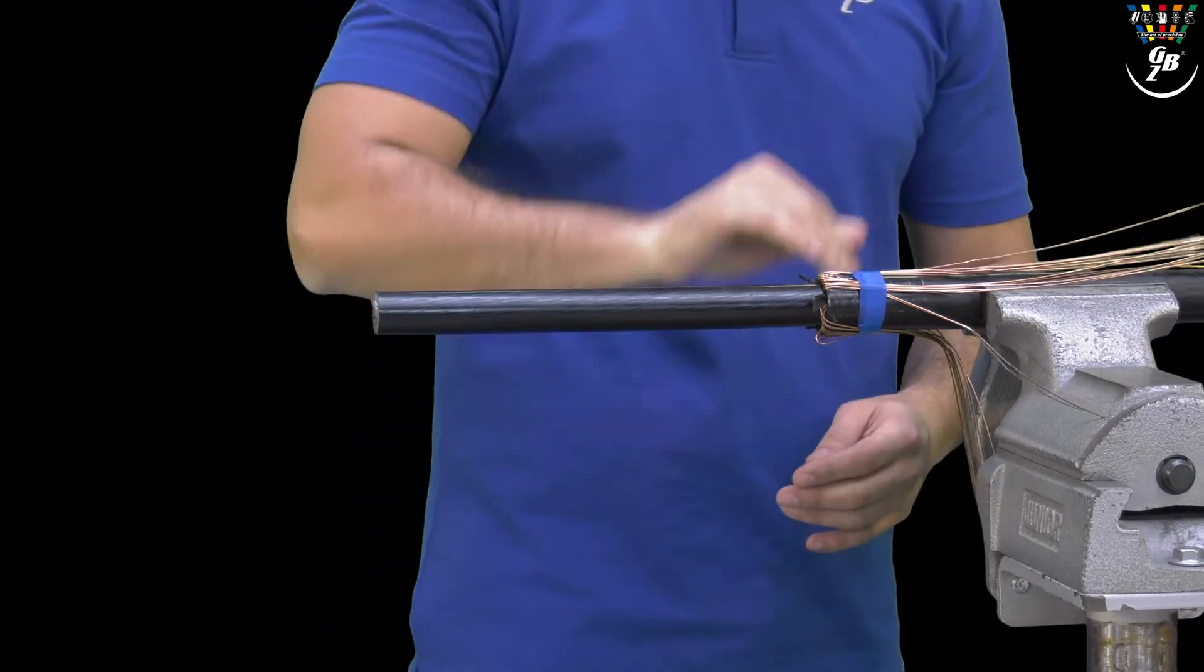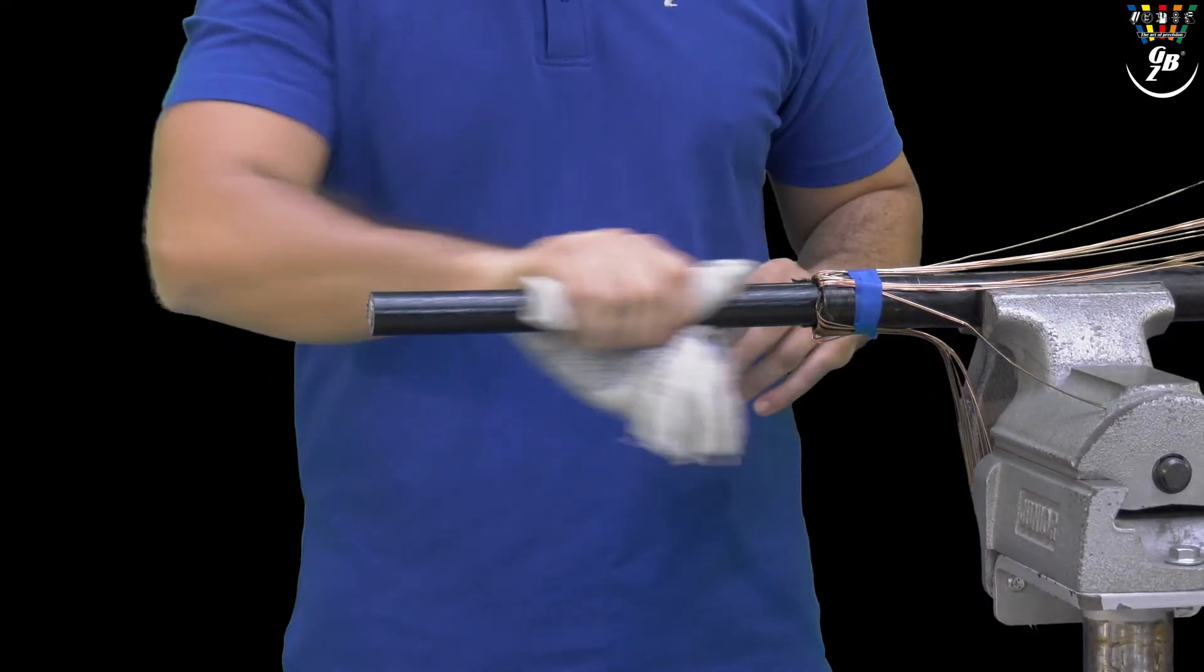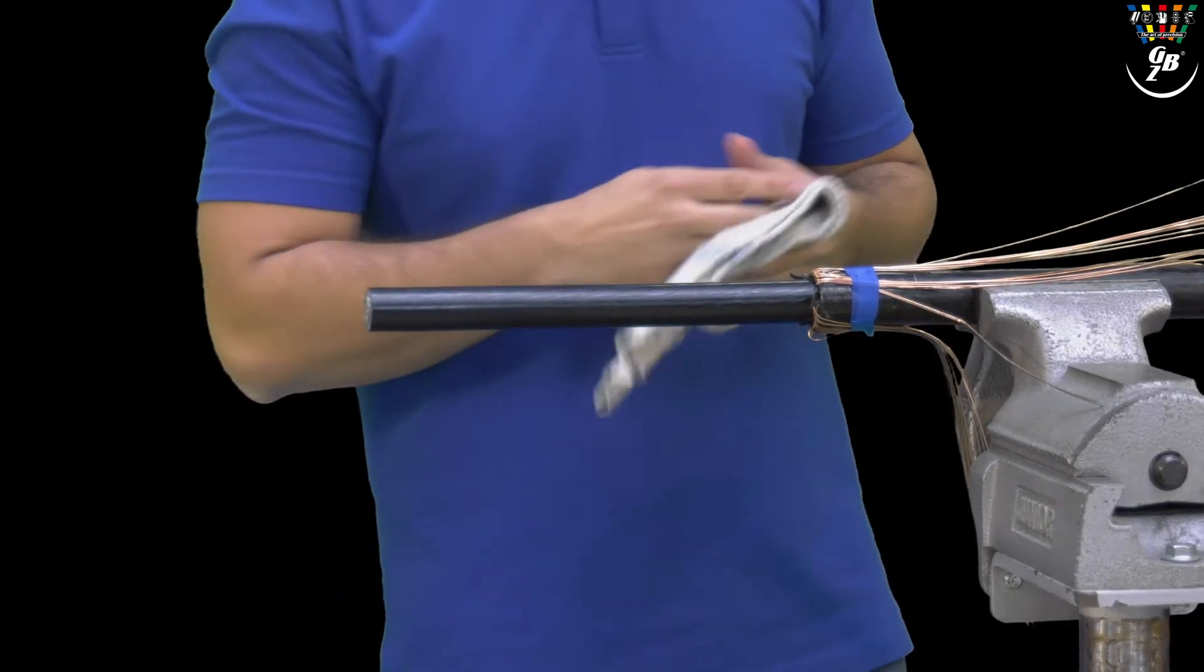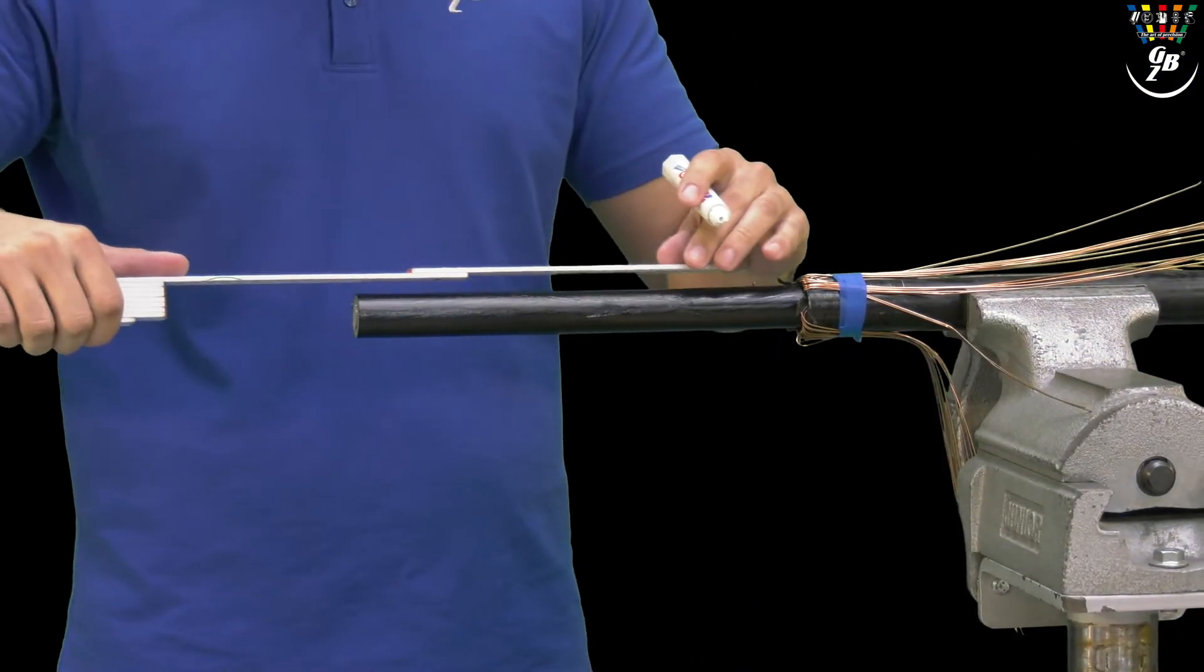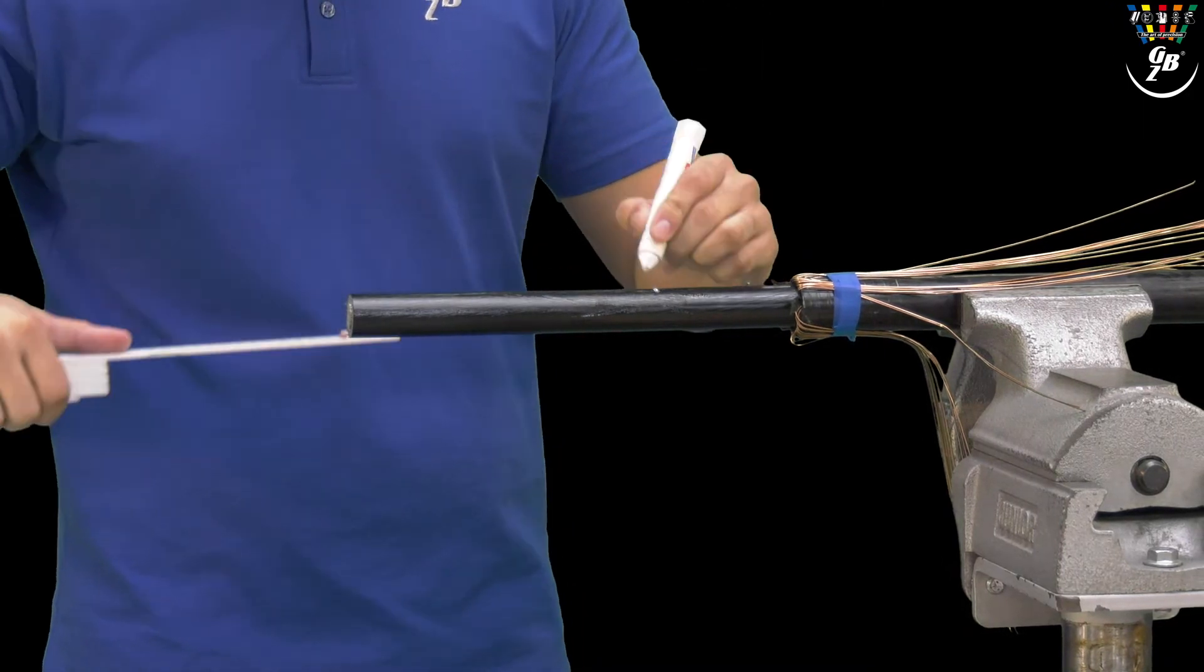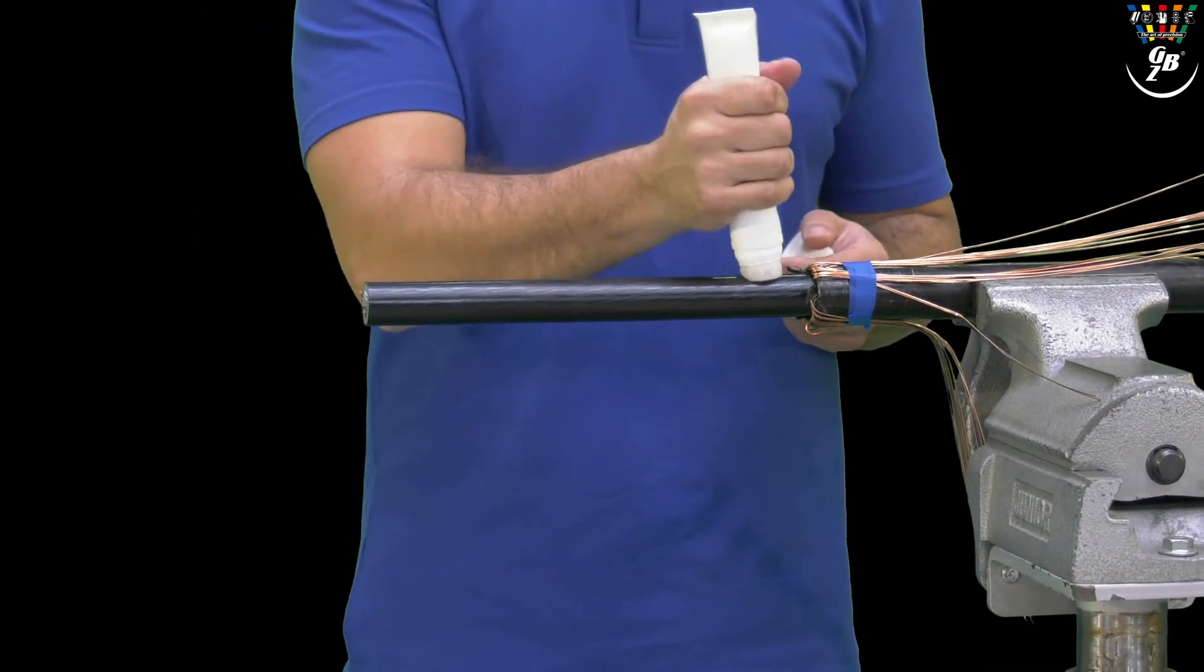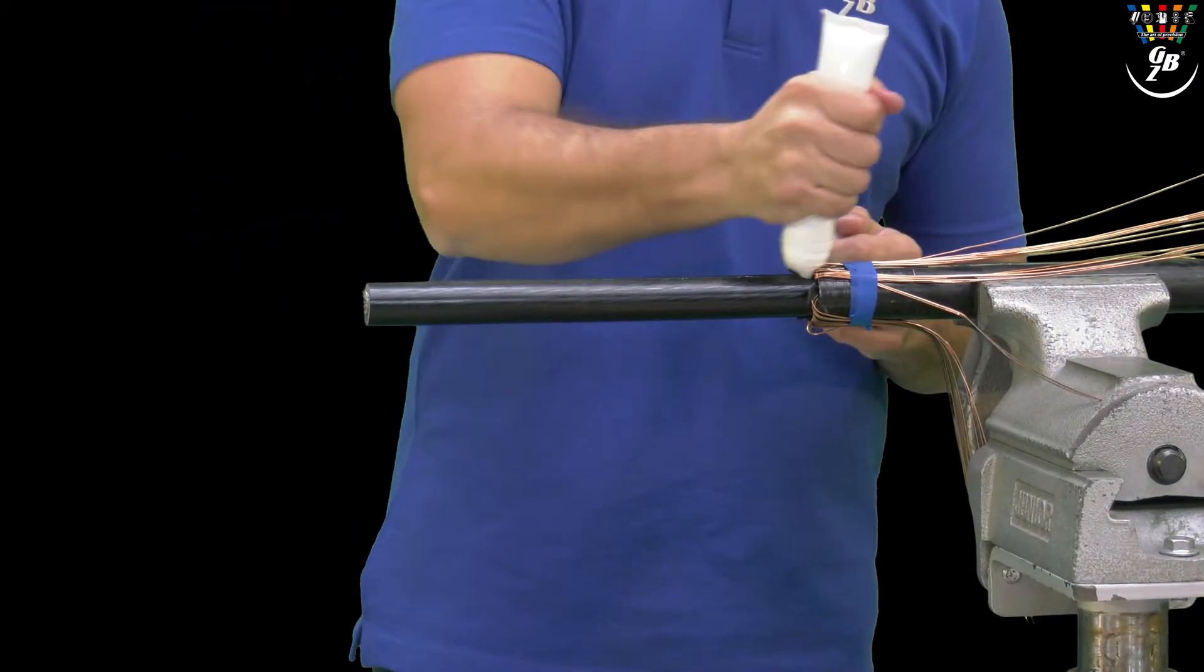We remove the inner conductive layer with the peeling tool GBP20. First we clean the cable. Then the peeling end has to be marked. And finally silicon is applied for better gliding of the tool.